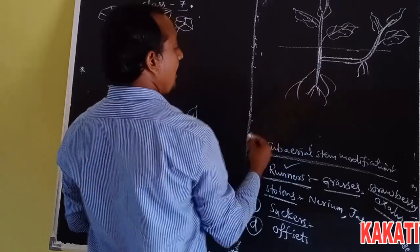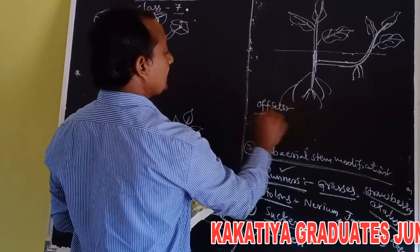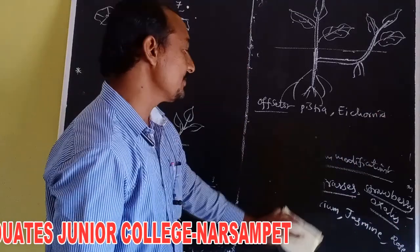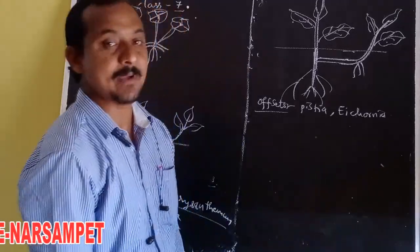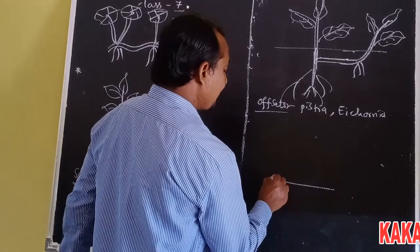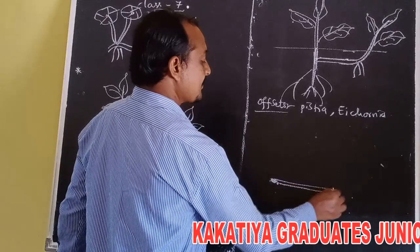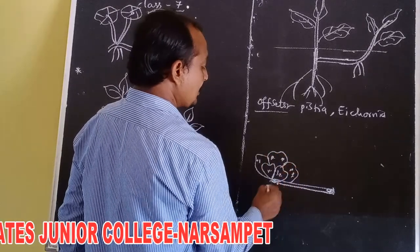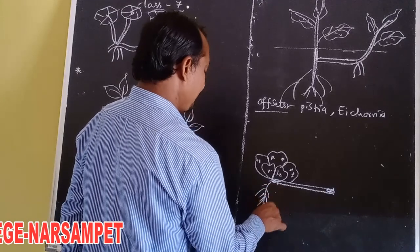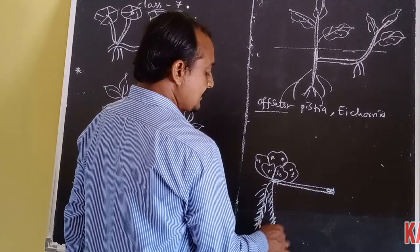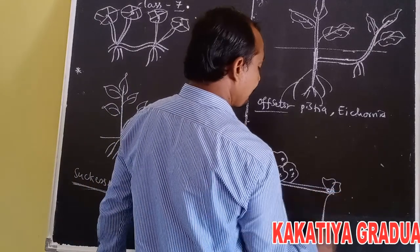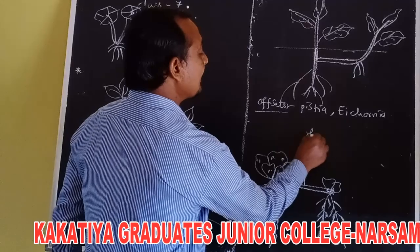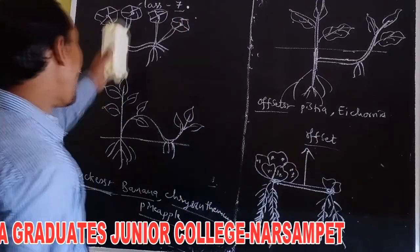Fourth and last is offsets. In Pistia and Eichhornia, the stem is reduced to form a discoid structure. Above the stem, leaves are developed in a rosette manner, and below the stem, a tuft of balancing roots are developed. Due to the presence of balancing roots, these plants freely float on the water surface. The axil of the leaf produces a one-internodal lateral branch called an offset. All sub-aerial stem modifications involve vegetative reproduction.